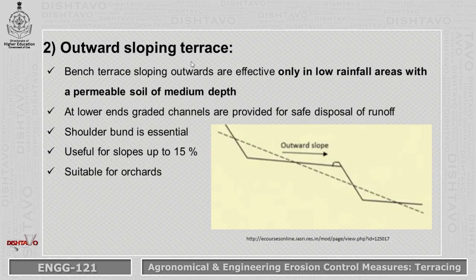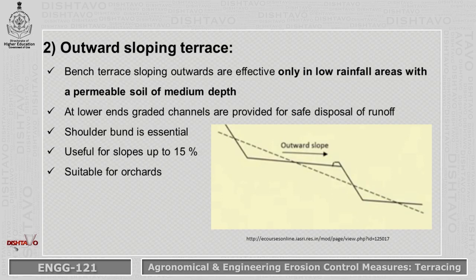Next is the outward sloping terrace. Here the slope is directed outward towards the shoulder bund, as shown in the diagram. Bench terraces sloping outward are effective only in low rainfall areas, meaning arid regions where rainfall is very less. At the lower ends, graded channels are provided for safe disposal of runoff, and the shoulder bunds — small bunds — are given. It is essential to protect this slope. These are useful for slopes up to 15 percent and can be used for orchards.